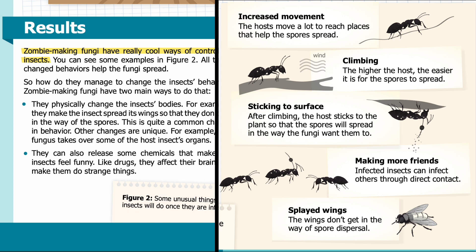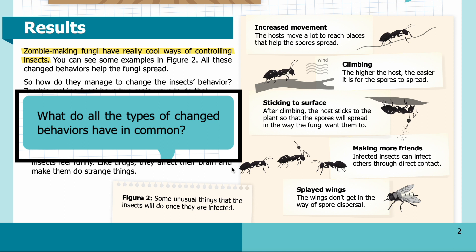Climbing — the higher the host, the easier it is for the spores to spread, especially if there is wind. Sticking to the surface — after climbing, the host sticks to the plant so that the spores will spread in the way the fungi want. Making more friends — infected insects can infect others through direct contact. And splayed wings — so that the wings don't get in the way of spore dispersal. What do all these types of changed behaviors have in common?